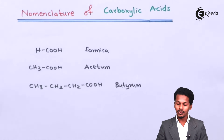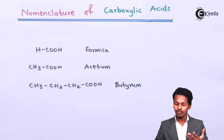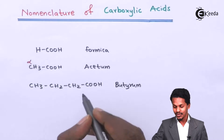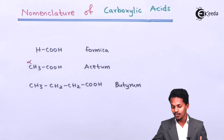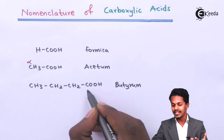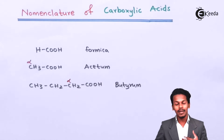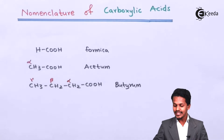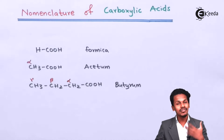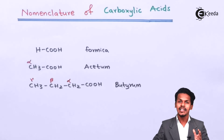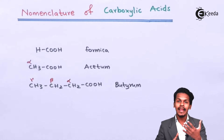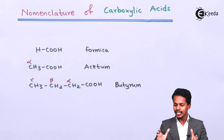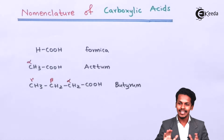In common naming, the carbon attached to the carboxylic group (COOH) is known as alpha carbon. The next carbon is beta carbon, then gamma, and so on. In the common name system, we indicate the positions of substituent groups using Greek letters — alpha, beta, gamma — to show where other groups are attached along the chain.